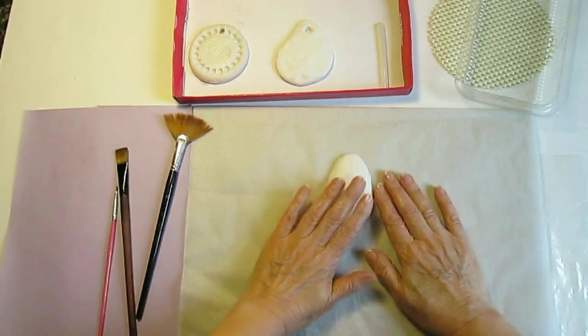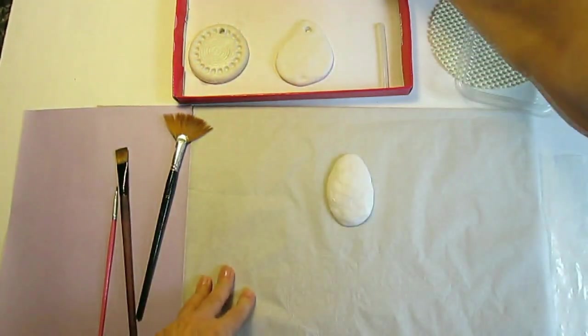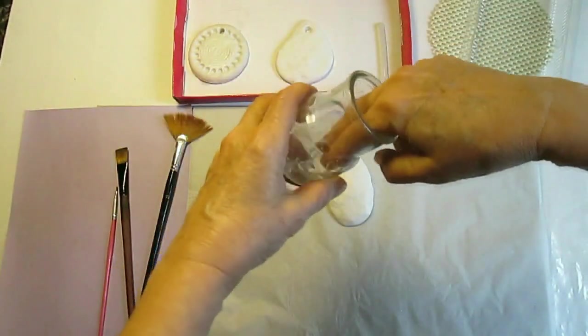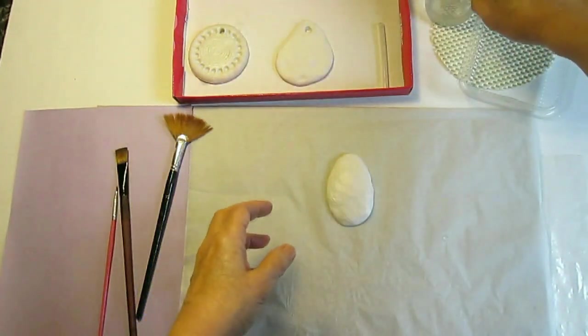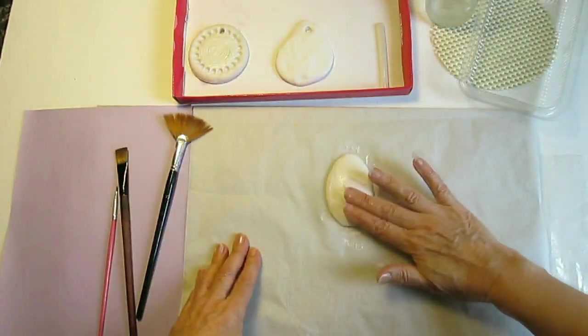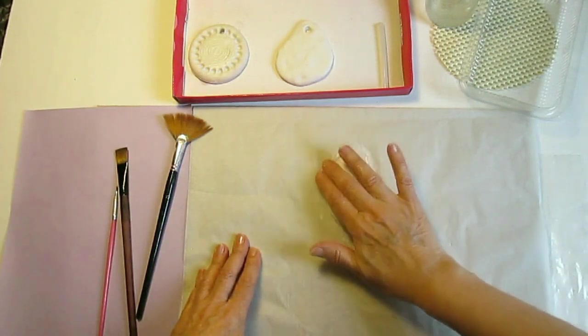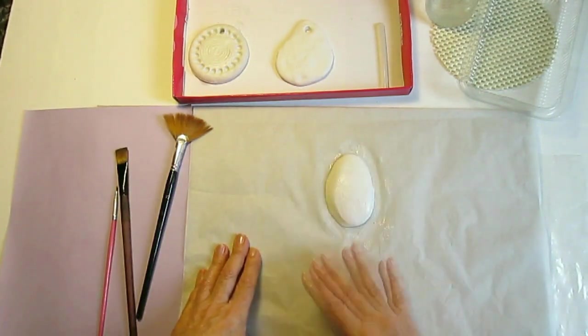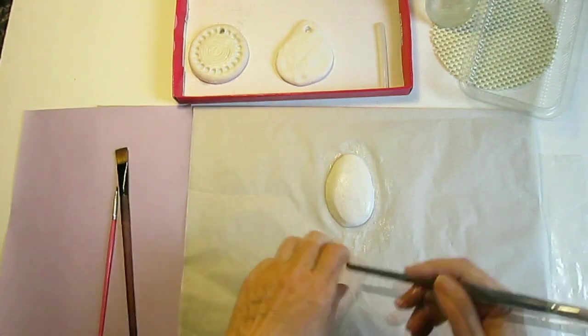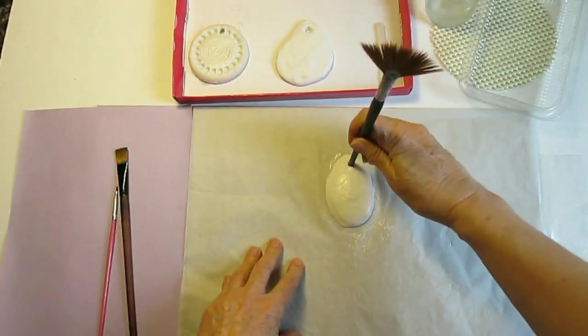And then I will take just a little bit of water on my fingers. The surface becomes smooth and now it looks like a big cabochon. And make the hole.